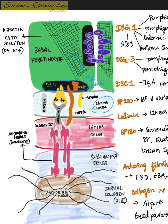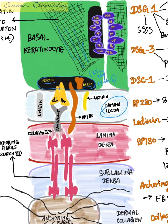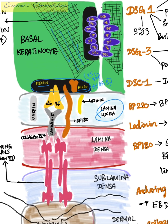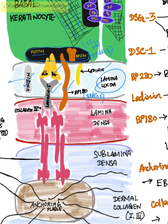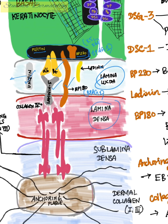Below that, you have the lamina lucida, which is the part between the plasma membrane and the lamina densa. The lamina lucida contains proteins like alpha-6 beta-4 integrin, BP180 (bullous pemphigoid 180 kilodalton antigen, otherwise called bullous pemphigoid antigen 2), laminin 5, ladinin, and uncein. Mutation in the uncein protein can lead to recessive junctional epidermolysis bullosa.